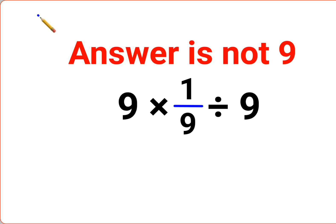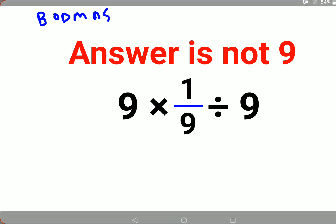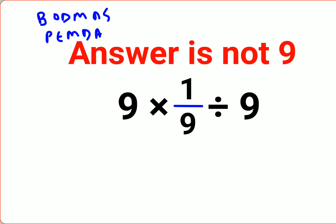...that there is no precedence to division and multiplication. Both of them hold equal priority. So when you have sums like this which has multiplication as well as division, then all you have to do is just go from left to right.